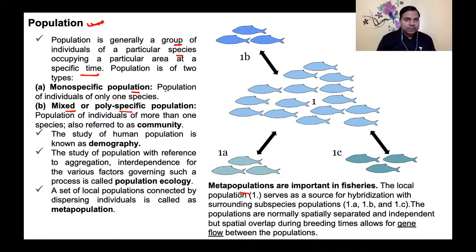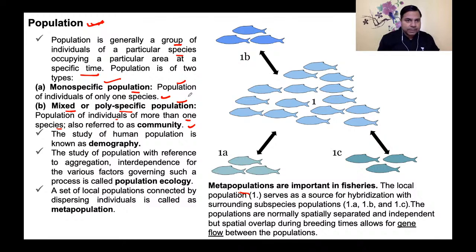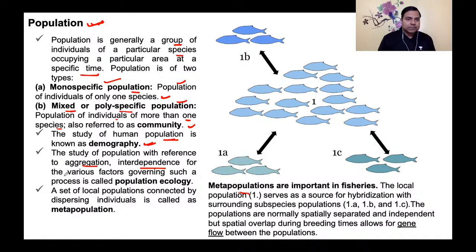In a mono-specific population, there is a population of individuals of only one species. In poly-specific or mixed population, there are individuals of more than one species — we also call that a community. The study of human population is known as demography. The study of population with reference to aggregation and interdependence of various governing factors is called population ecology.